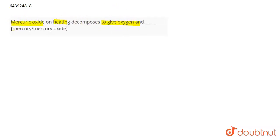You have to determine whether mercury or mercury oxide will be formed when mercury oxide is heated. Mercuric oxide is HgO. When HgO (mercuric oxide) decomposes on heating, it leads to the formation of mercury in the liquid state, along with the evolution of oxygen gas.